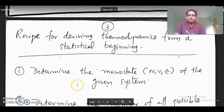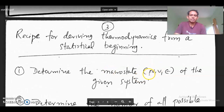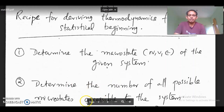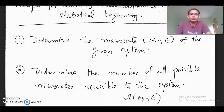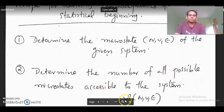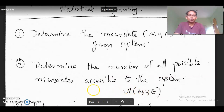The first step is to determine the macro state of the given system. We have to know the macroscopic parameters — in this case, the number of particles, volume, and energy. Then the second step is to determine the number of microstates accessible to the system corresponding to that macrostate with N, V, and E.